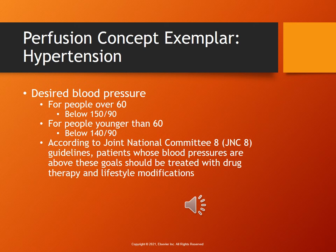We all need a certain amount of blood pressure, but we don't want it to be too high, where that can cause problems. Hypertension is the most common health problem in primary care. It can cause stroke, MI, kidney failure, and death if not treated early or effectively. For people over 60, we want it below 150 over 90. For people younger than 60, we want it below 140 over 90.